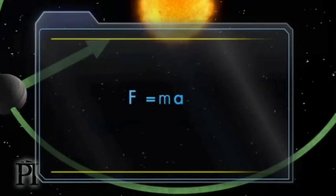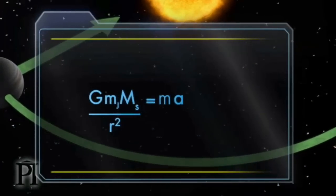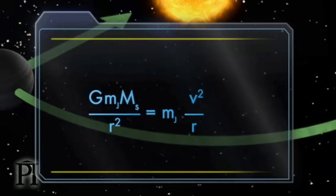So if we substitute the gravitational force and Jupiter's acceleration into Newton's second law, we get the following formula.